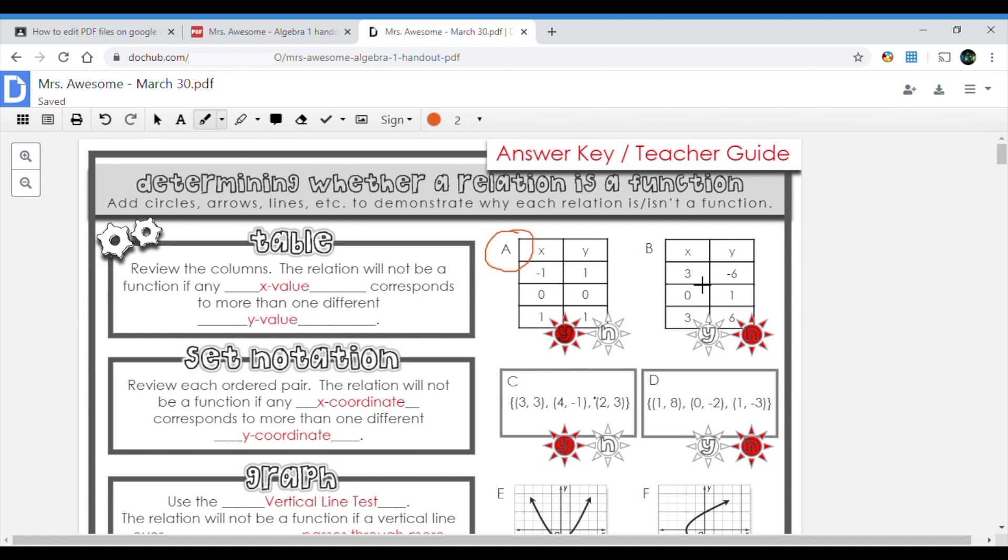If I look at this one, I have 3, 0, 3. This is not a function because the threes are repeating. Do you see that?